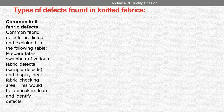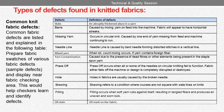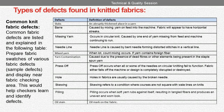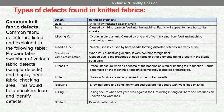4 types of defects found in knitted fabrics — common knit fabric defects. Prepare fabric swatches of various fabric defects and display them near the fabric checking area to help checkers learn and identify defects. Slubs: an abruptly thickened place in a yarn. Burr: caused by mixing yarn on feed in the machine; fabric will appear to have horizontal streaks. Missing yarn: occurs in circular knit caused by one end of yarn missing from the feed while the machine continues to run.